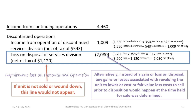Alternatively, once management has classified the operation as discontinued, there may be an impairment required to adjust the division to the lower of cost or fair value less cost to sell. Any impairments on long-lived non-current assets associated with the discontinued operation would be shown in this area instead. In our case, a $3.2 million loss was incurred in the disposal year of the services division, and the tax savings that resulted from the loss is calculated to be $1.12 million based on our 35% tax rate. The final amount reported is therefore a loss on the disposal of the services division of $2,080,000, net of a tax savings of $1,120,000.